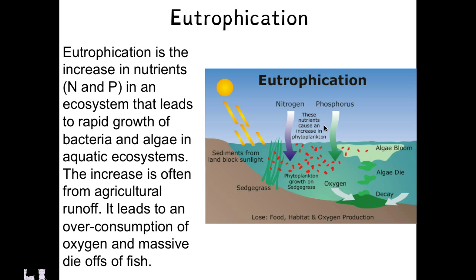Eutrophication is what can happen if there is a tremendous surge in the amount of nutrients — too little nutrients is bad, but too much is also bad. If large amounts of nitrogen and phosphorus are added to fertilizers and those fertilizers run off into a lake or river, they can lead to rapid growth of bacteria and algae in those watery ecosystems. This leads to an over-consumption of oxygen, and you tend to get massive die-offs — pretty much the lake becomes stagnant and unable to support life because of this huge surge in nitrogen and phosphorus.